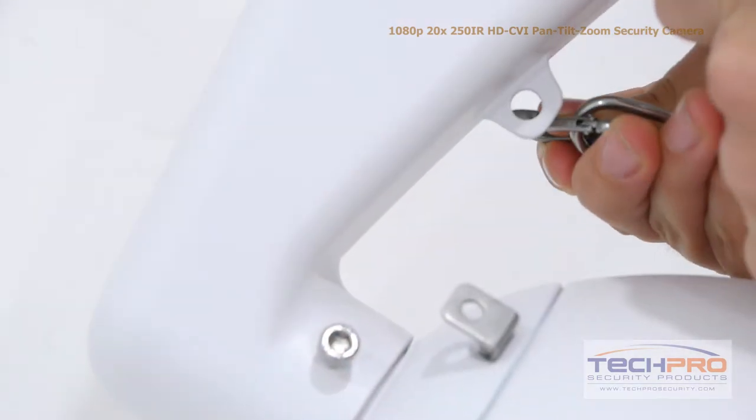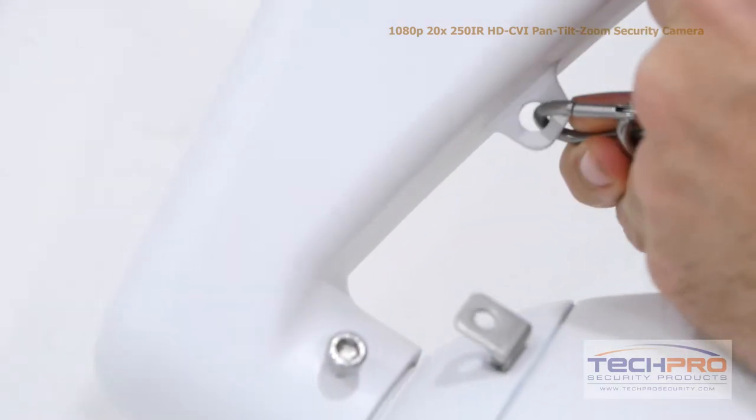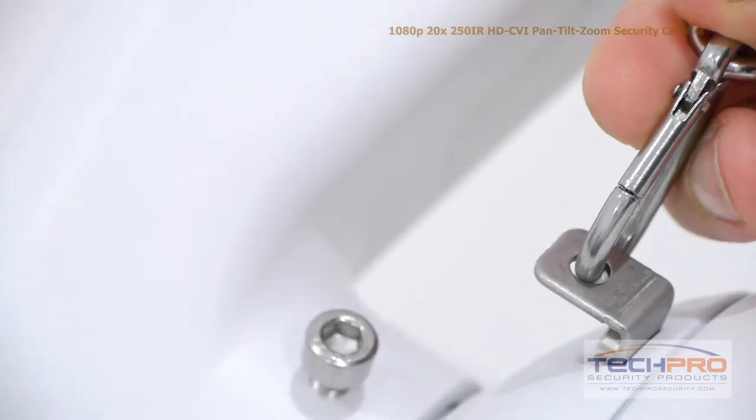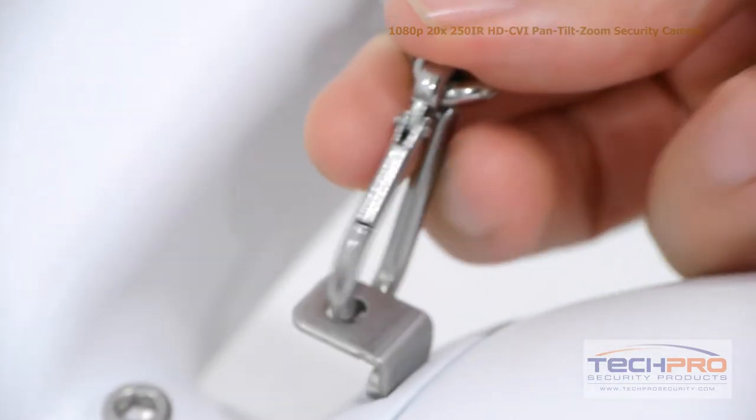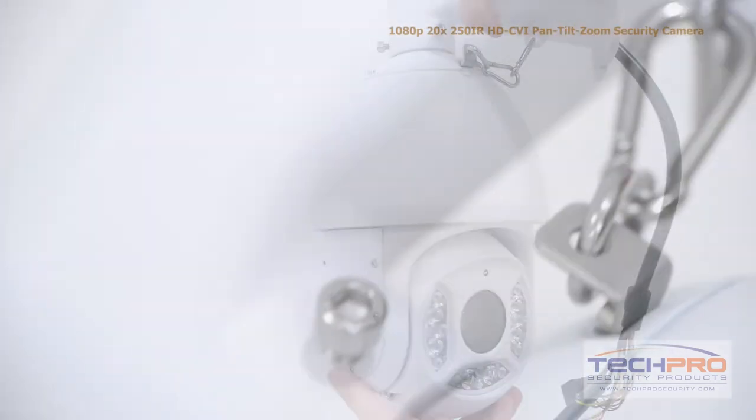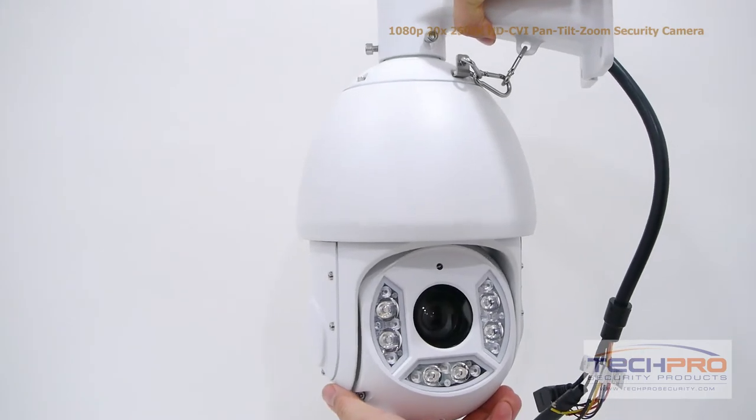After the dome is attached to the wall mount, attach the safety hook to both the wall mount and the dome of the camera. This ensures that if the dome somehow gets detached, it won't go crashing to the floor. Now the camera is ready to be mounted to the wall.